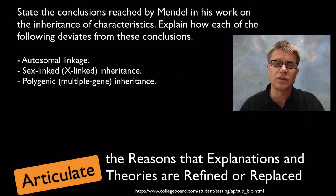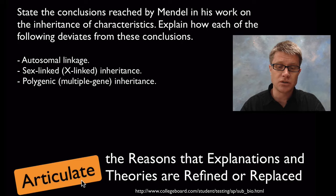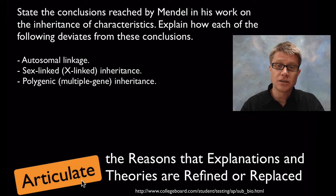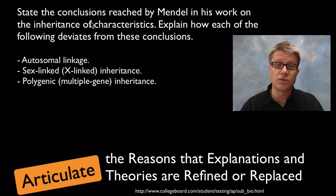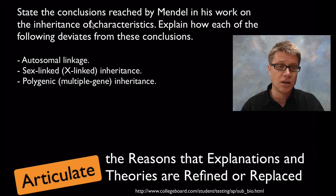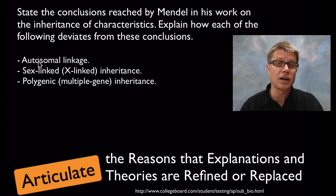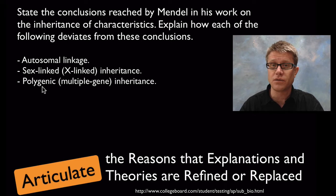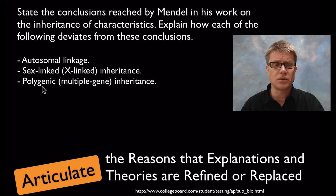State the conclusions reached by Mendel in his work on the inheritance of characteristics, and explain how certain findings deviate from those conclusions. We're trying to articulate the reasons that explanations and theories are refined or replaced. Mendel's laws include the law of segregation — alleles segregate as we form gametes — and independent assortment — genes don't affect other genes. But autosomal linkage, sex linkage, and polygenic inheritance deviate from this. It's not that Mendel was wrong; we had to refine his theory over time.